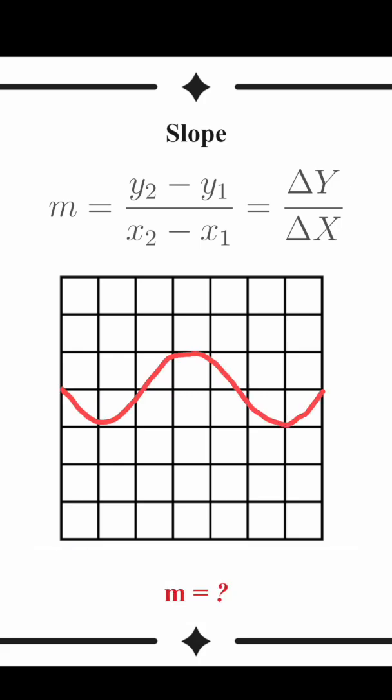The slope on this graph is constantly changing. If we draw a tangent line, we can find the instantaneous slope at any point. For example, the slope is positive here, zero here, and negative here.